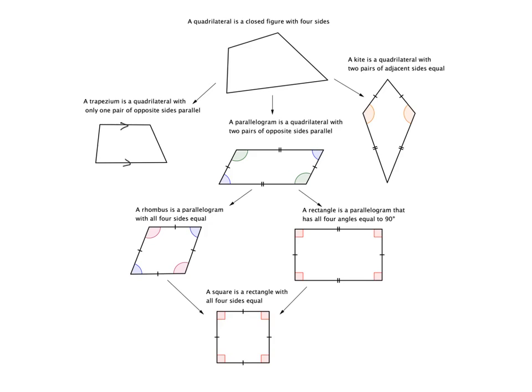We can go for a slightly more specialized parallelogram. A rhombus still has both pairs of opposite sides parallel, but what makes it special is that all four sides are equal. It still has the parallelogram property that opposite angles are equal to each other, but now all four sides are equal.